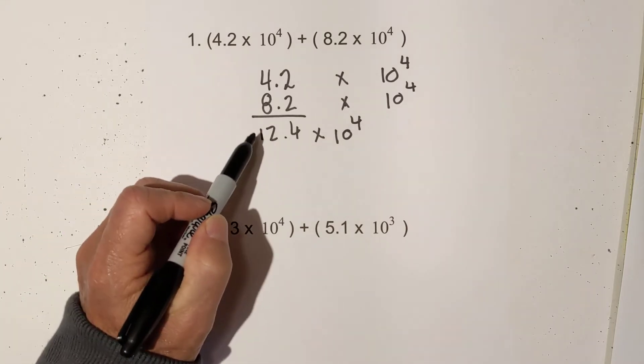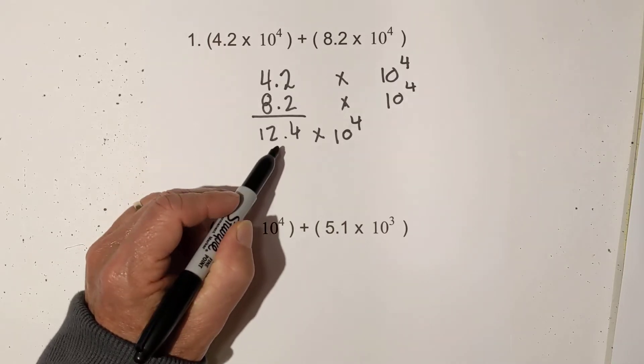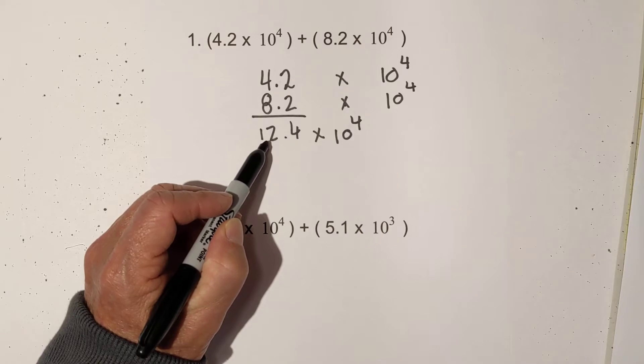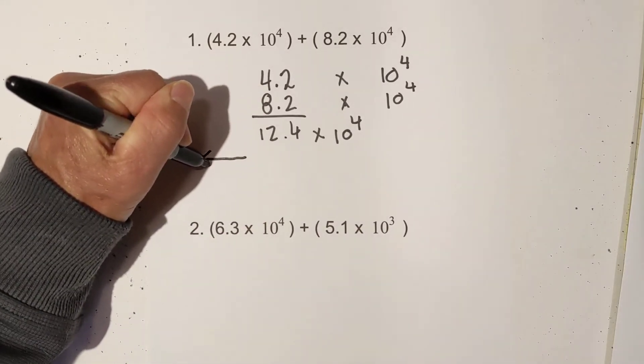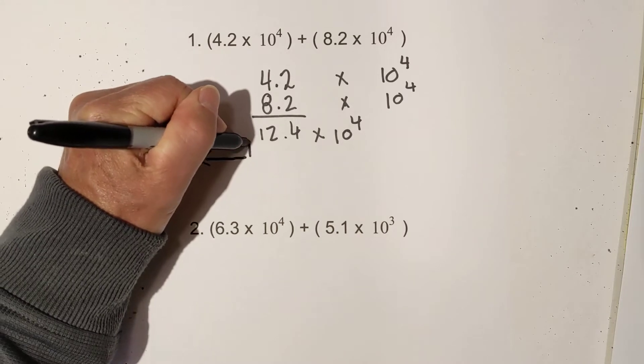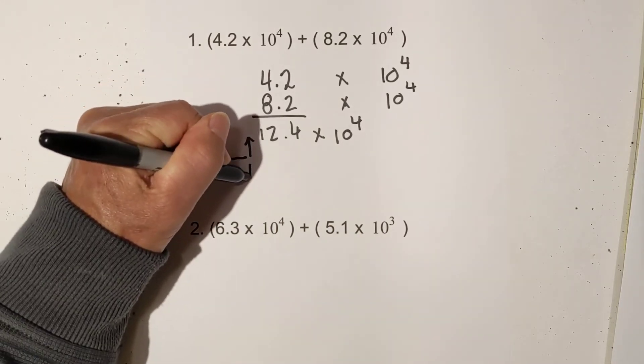Now I do have this because there's another rule. The first number needs to be between 0 and 10. So what I need to do is move the decimal place one place to the left. And here's the first rule. As the number gets smaller, the exponent gets larger. And as the number gets larger, the exponent gets smaller.